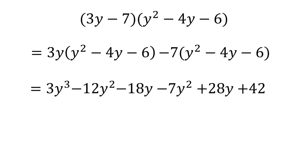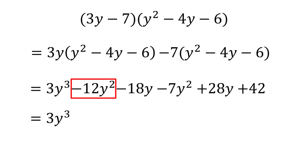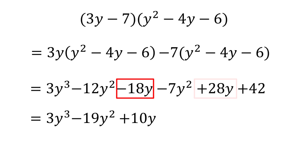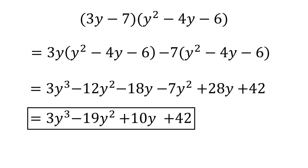Now we need to combine terms. There's only one y to the third term, which is 3y to the third, so we'll list that first. Then look for y squared terms — negative 12y squared and negative 7y squared — which add up to negative 19y squared. Now look for y terms: negative 18y and 28y, which add up to 10y. Finally, there is one constant, 42. Our final answer is 3y to the third minus 19y squared plus 10y plus 42.